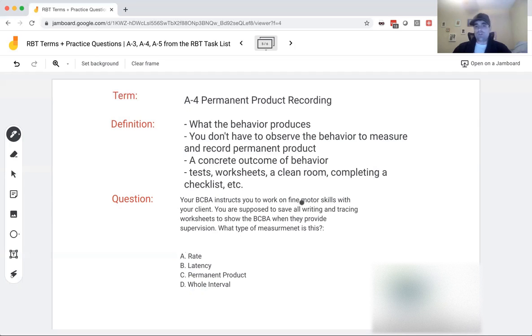Question. Your BCBA instructs you to work on fine motor skills with your client. You're supposed to save all writing and tracing worksheets to show the BCBA when they provide supervision. What type of measurement is this? So your BCBA implements a fine motor skill program. You've been working on fine motor skills. The BCBA is obviously not there at every session. You are. So they're not actually watching them write and trace and do fine motor.